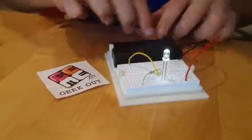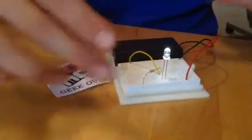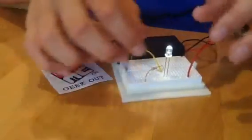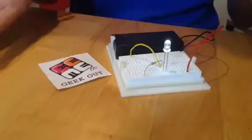The way that a circuit works is all the wires have to be connected, positive to negative, and there has to be energy running through it to make the bulb light up.